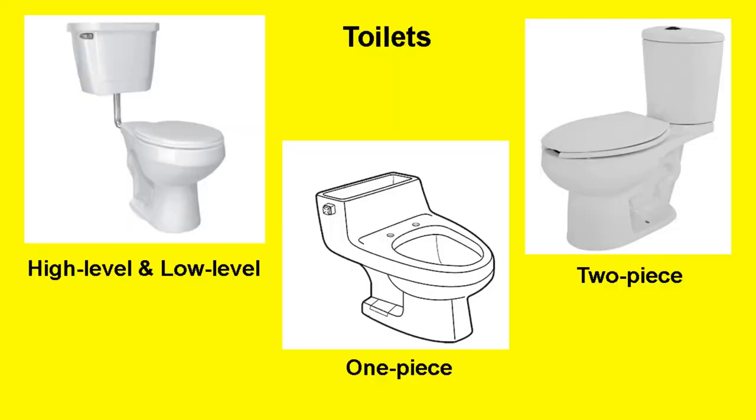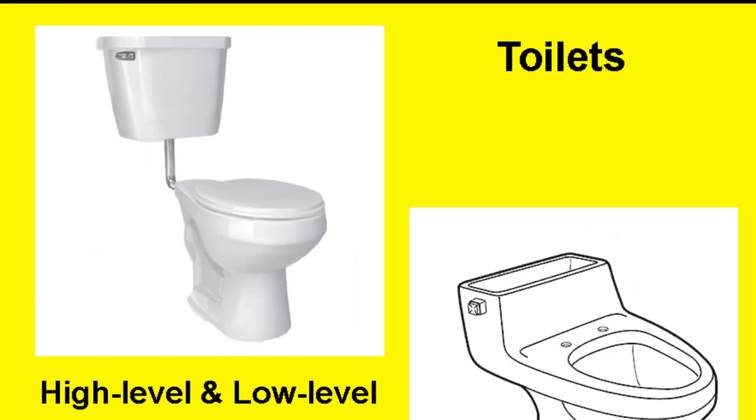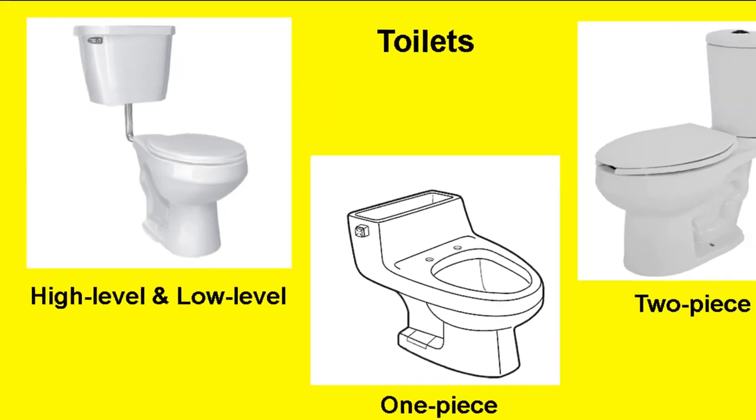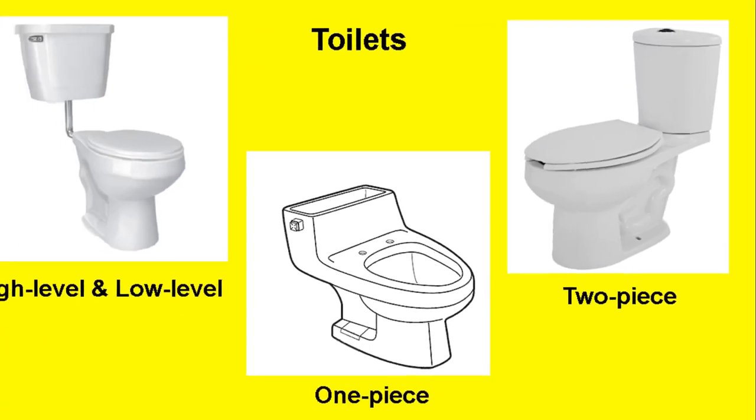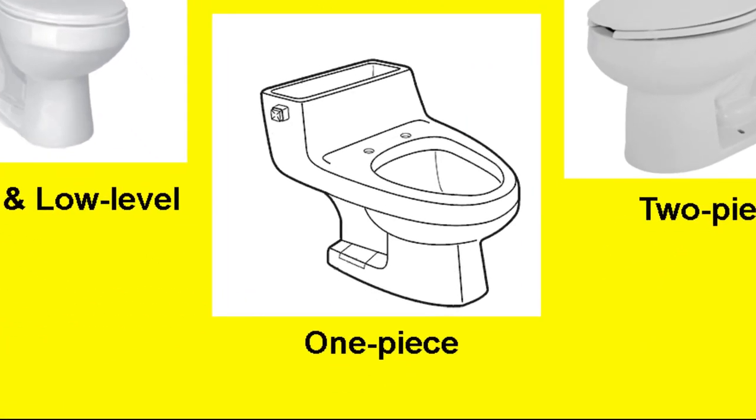These are the main kinds of toilets we currently can find in our bathrooms. The high level and low level toilets where the tank hangs on the wall and flushes water to the bowl through a pipe. Then we have the two-piece or coupled toilet where the tank is bolted onto the top of the bowl and the flush valve goes directly into the bowl. And finally the one-piece toilet where the tank and bowl are cast as one porcelain structure.